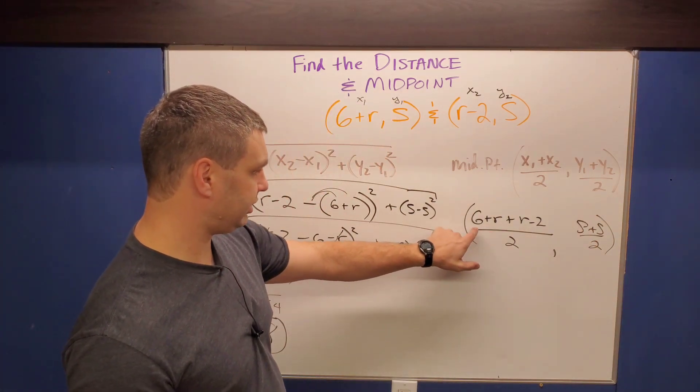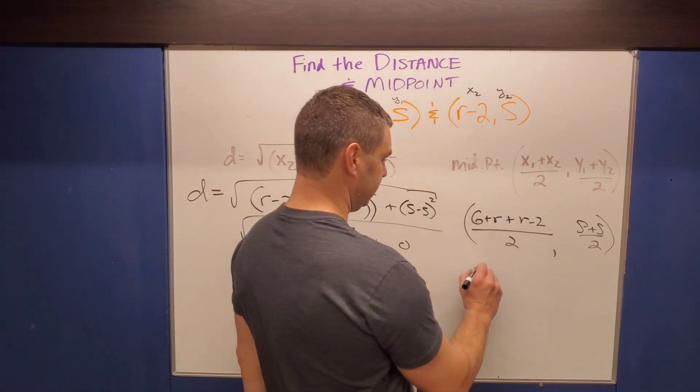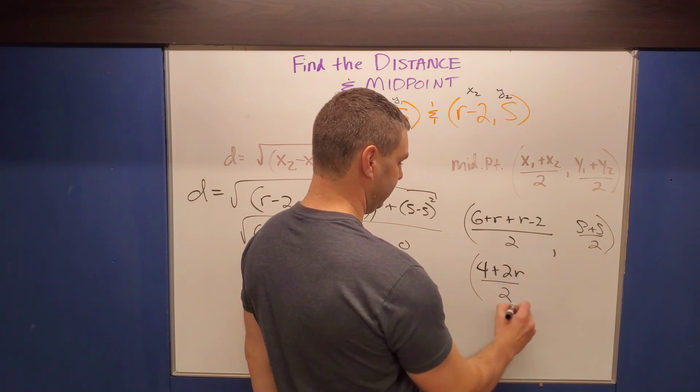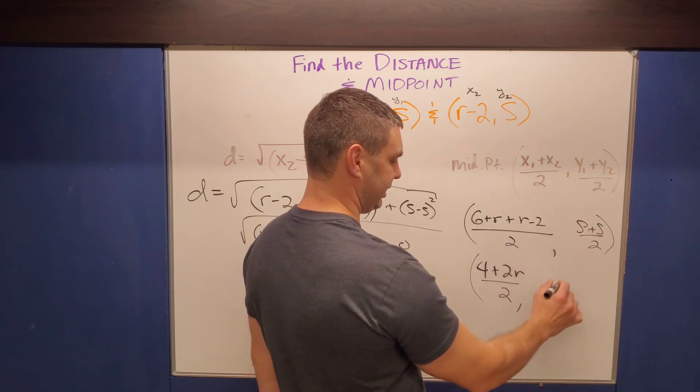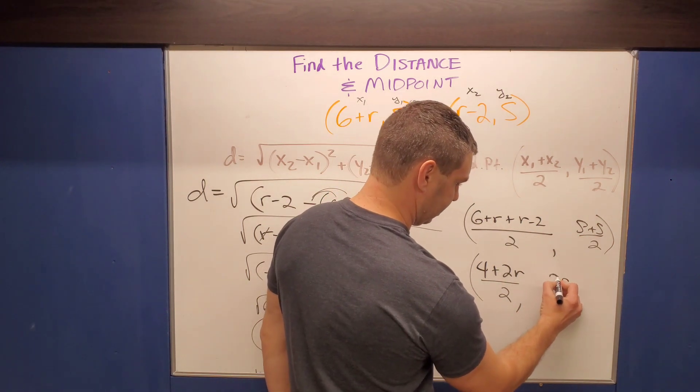Six minus two is four. R plus R is two R. So we'll say four plus two R divided by two, comma. And then S plus S is also two S over two.